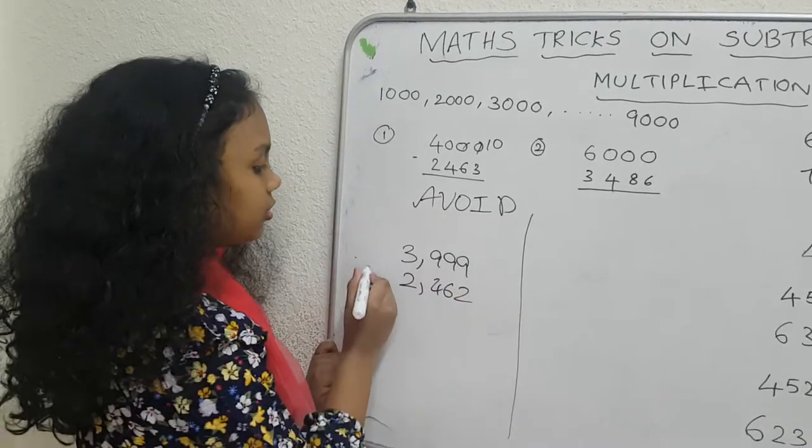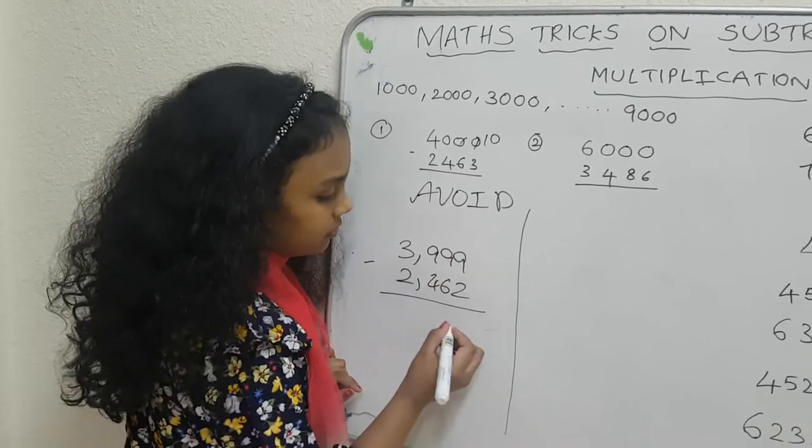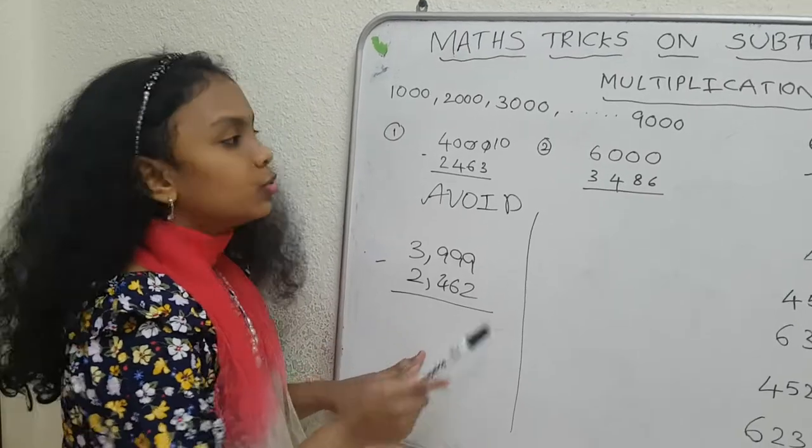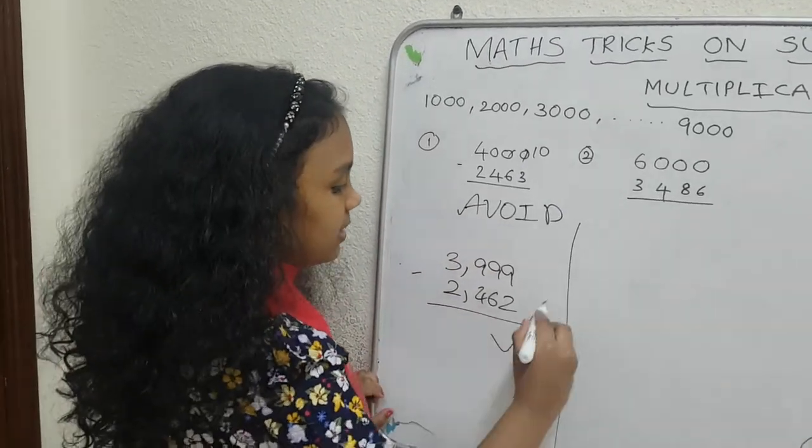2462. So now, we have to manage it. So you will do this, okay? Now, it will be correct if you do in this way or this way. This is the right way to do it.